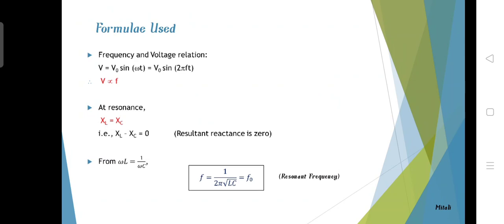The formula used for this experiment is V equals V naught sin omega t. From this equation, we can see that V is proportional to sin of F. So at resonance,